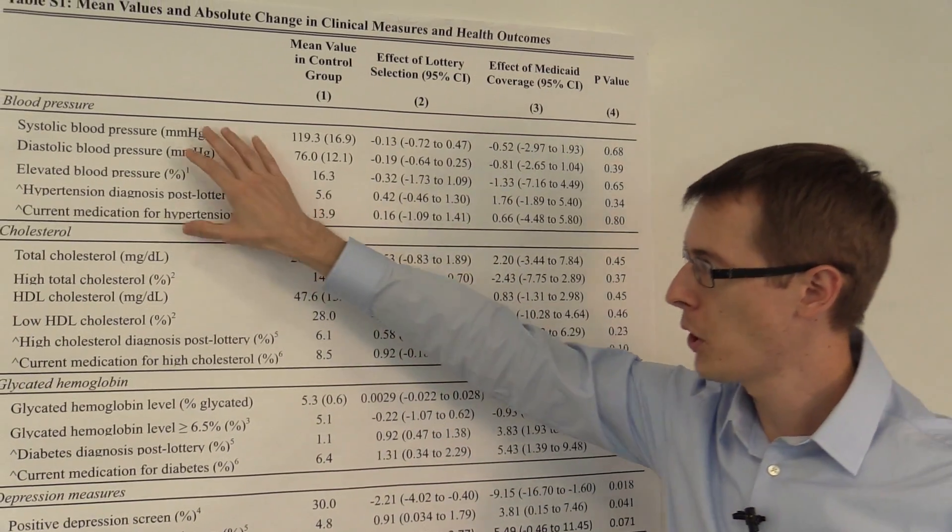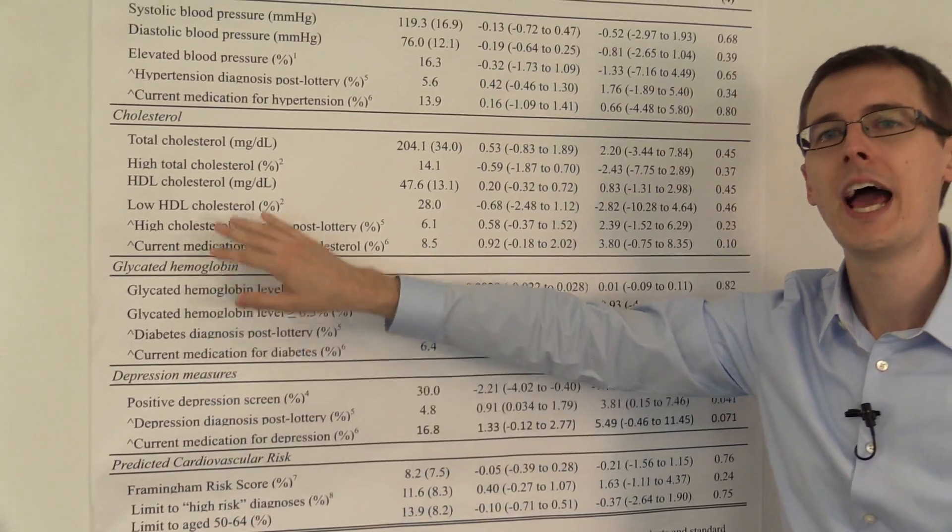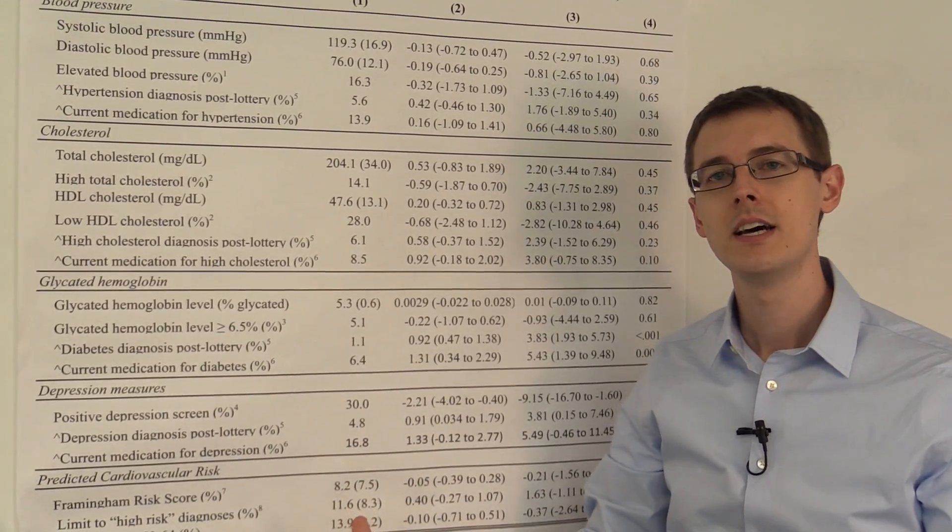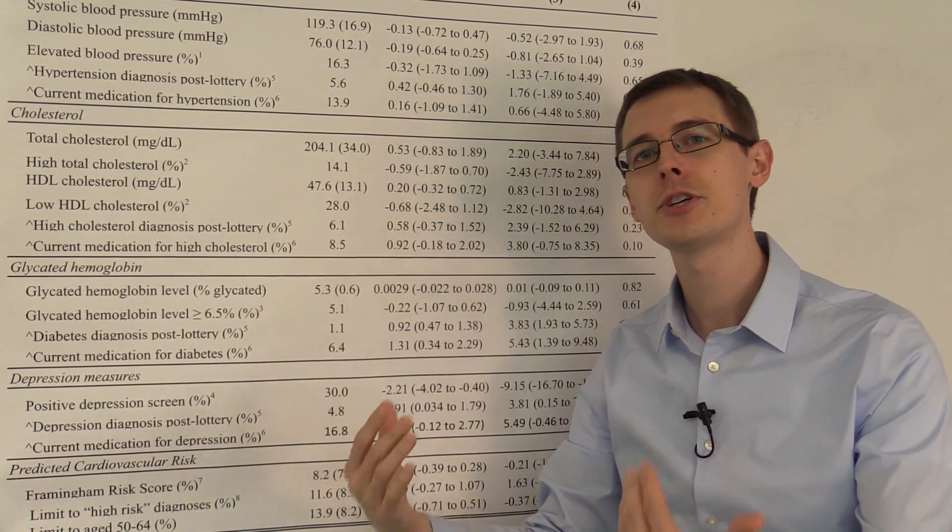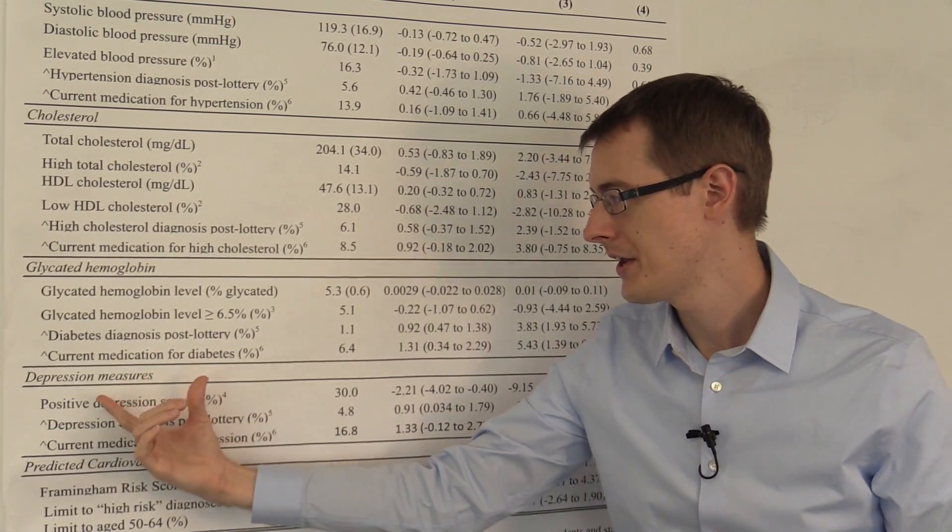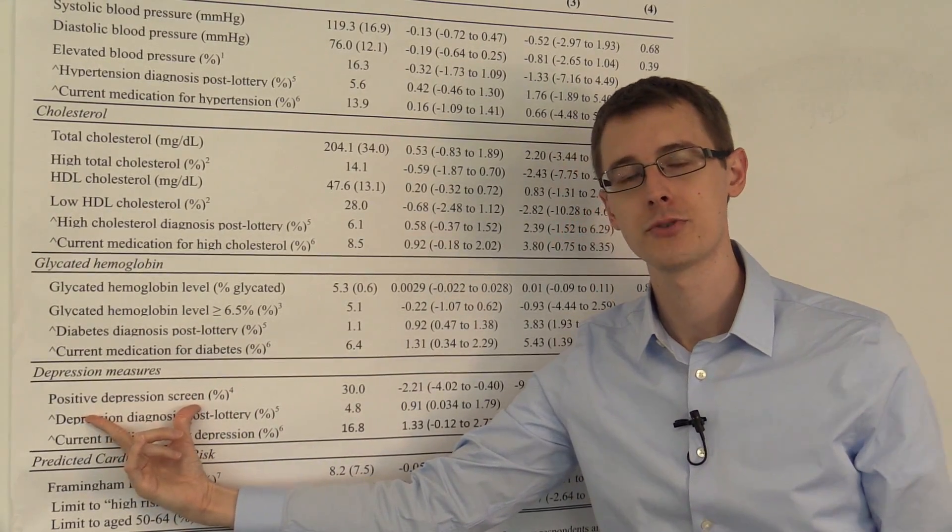Remember over here, each of these different rows are different outcome variables that we might be interested in, like what's the effect of getting the option of having Medicaid on whether you have a positive depression screen or not.